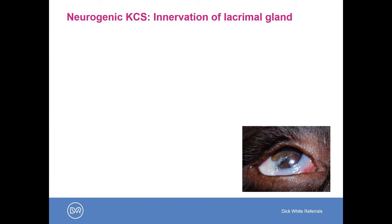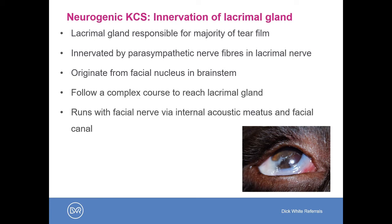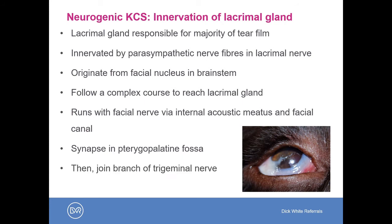A more common cause of dry eye is neurogenic dry eye. The lacrimal gland, which produces 70% of the aqueous component of the tear film, is innervated by parasympathetic nerve fibers. These fibers originate in the brain stem in the facial nucleus and follow a very complicated course to reach the lacrimal gland — first running with the facial nerve via the internal acoustic meatus and the facial canal, then synapsing in the pterygopalatine fossa, then joining a branch of the trigeminal nerve before branching off to reach the lacrimal gland.